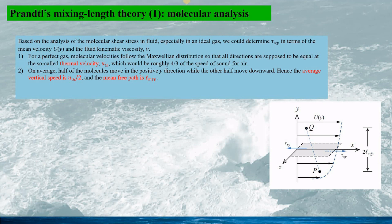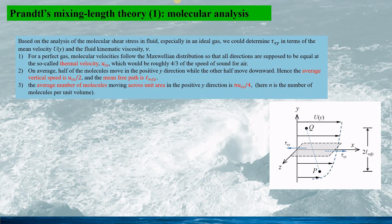On average, half of the molecules moves in positive y-direction, while the other half moving downward. Hence the average vertical speed is half u_th, and the mean free path is L_mfp. The average number of molecules moving across the unit area in the positive y-direction is N u_th divided by 4. Here N is the number of the molecules per unit volume.